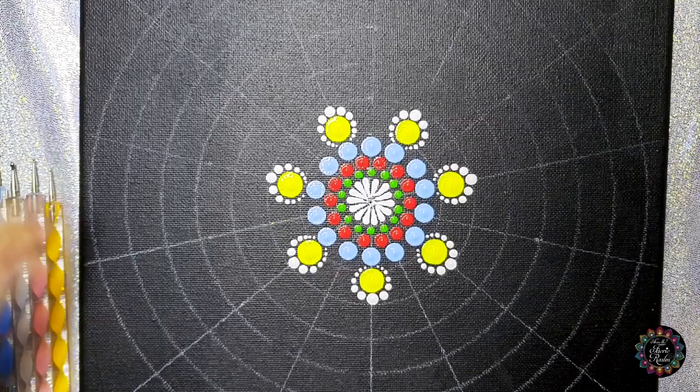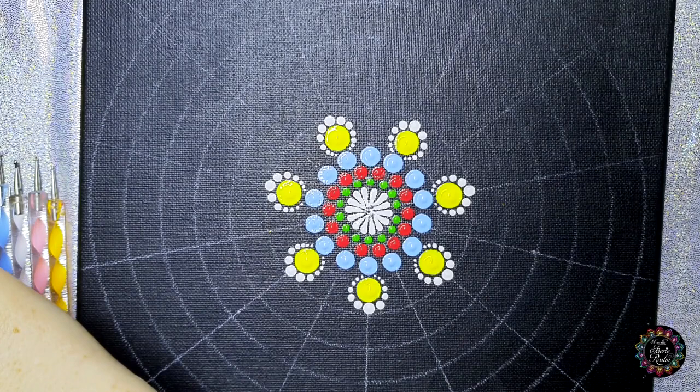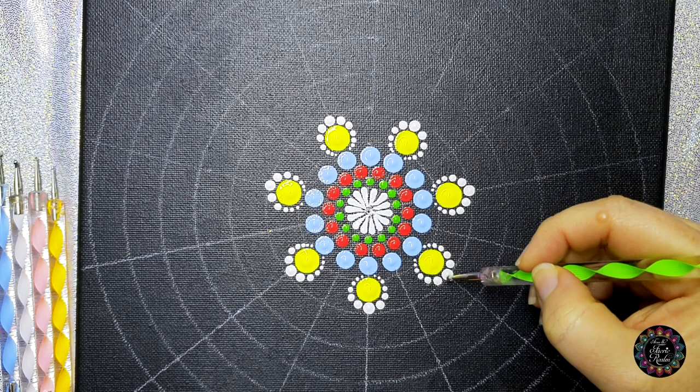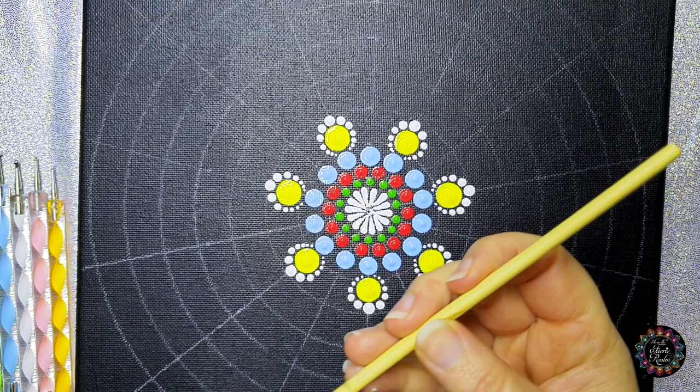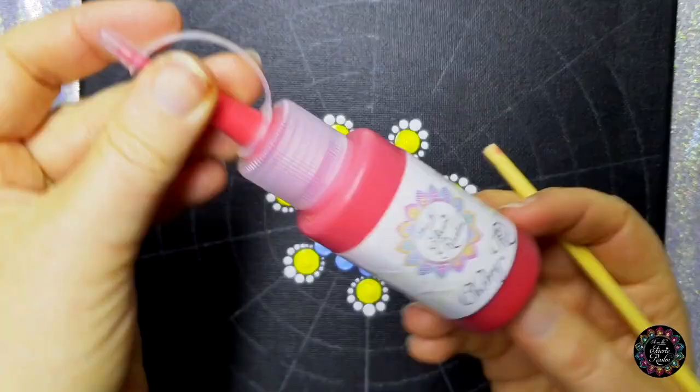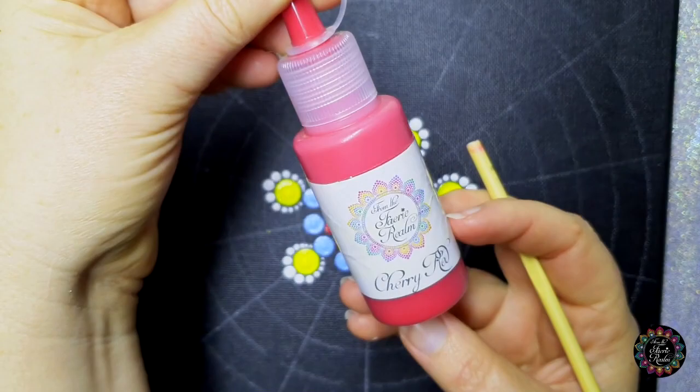Then we're going to do another layer of petals. So because remember how I said we go up in size this way and down in size that way, so the last one we started with was a four millimeter, so in other words we need to do the next in the five millimeter. So five millimeter we are going to do in red.